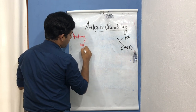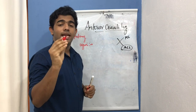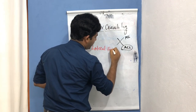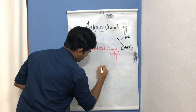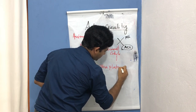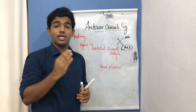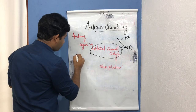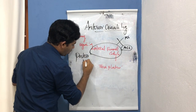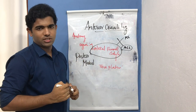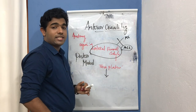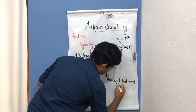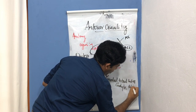Where is the origin of the anterior cruciate ligament? The anterior cruciate ligament originates from the lateral femoral condyle and inserts into the tibial plate. More specifically, the posteromedial aspect of the lateral femoral condyle is the origin, and it is inserted into the medial tibial intercondylar tubercle, also called the intercondylar spine.